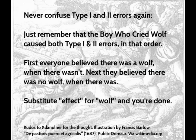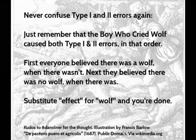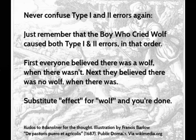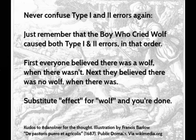The boy who cried wolf caused both Type 1 and Type 2 errors in that order. First, everyone believed there was a wolf when there wasn't — substitute the word 'effect' for 'wolf' and that's your Type 1 error: everyone believed there was an effect, but there wasn't. Next, they believed there was no wolf when there was — and that's your Type 2 error: they believed there was no effect when there was.